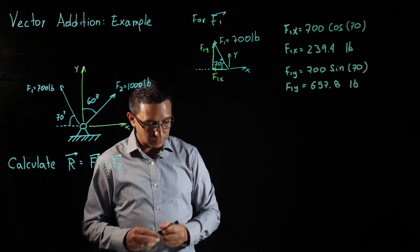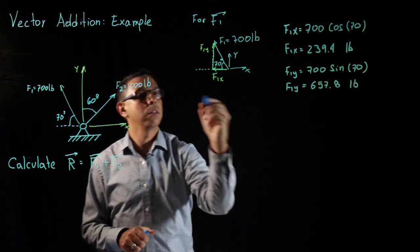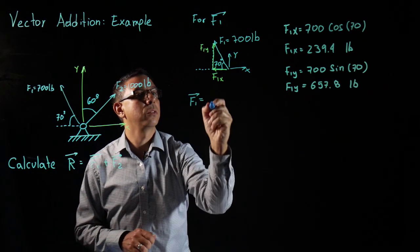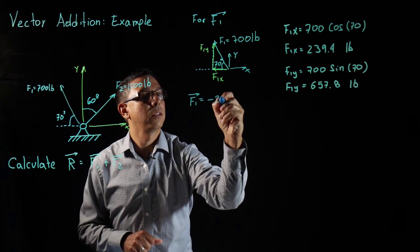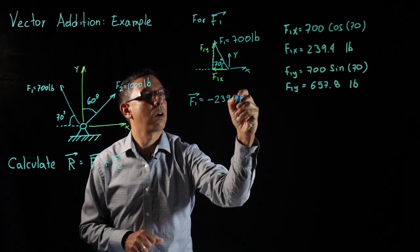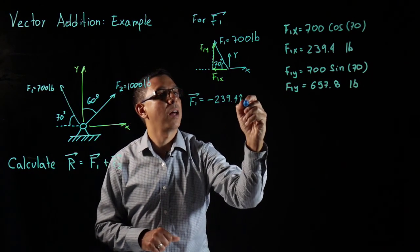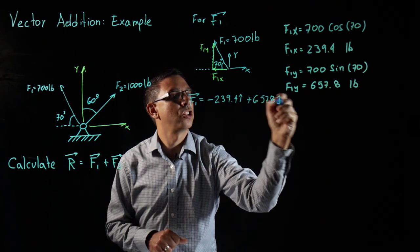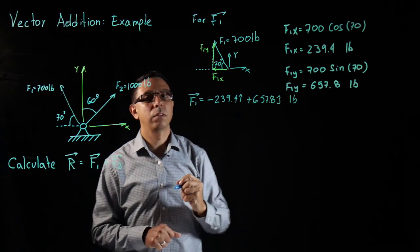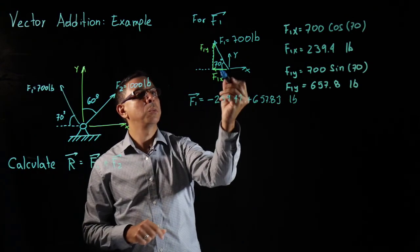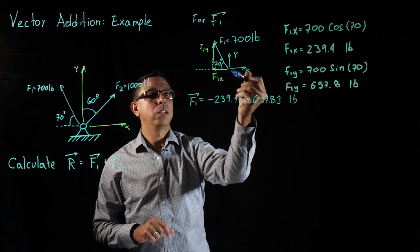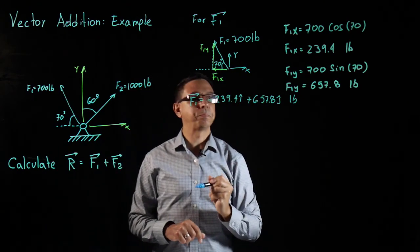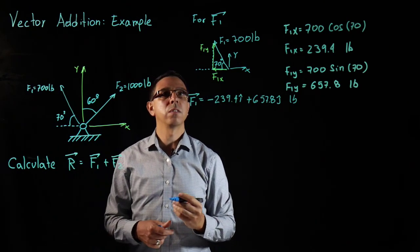What that means is that my F1 vector, now we know that F1 in Cartesian vector form is going to be equal to minus 239.4i plus 657.8j pounds. Where does that negative came from? Again, it's because of the direction of this F1X. It is going in the opposite direction of your X axis so it needs to be negative. Alright, so we have one of those vectors in Cartesian vector form.